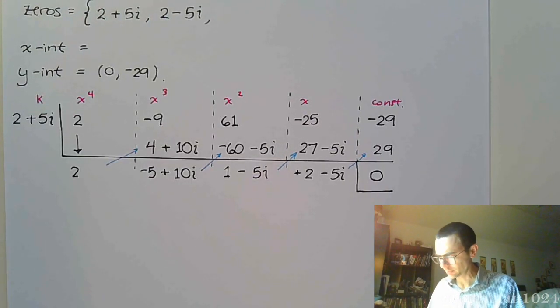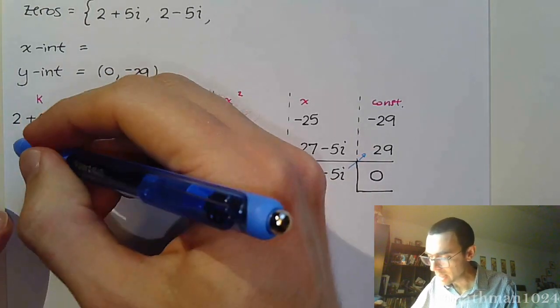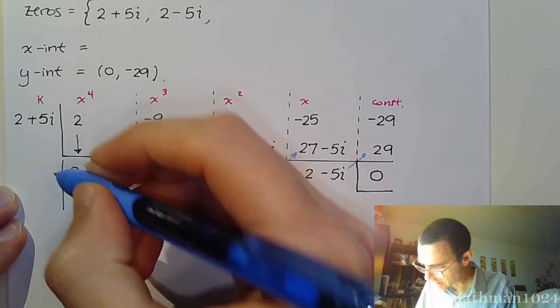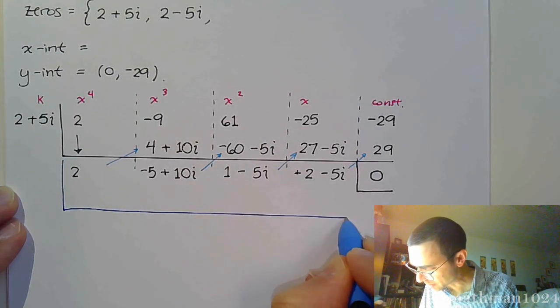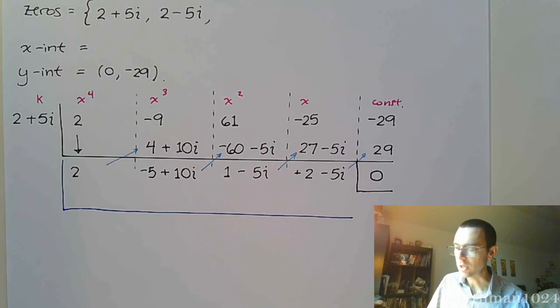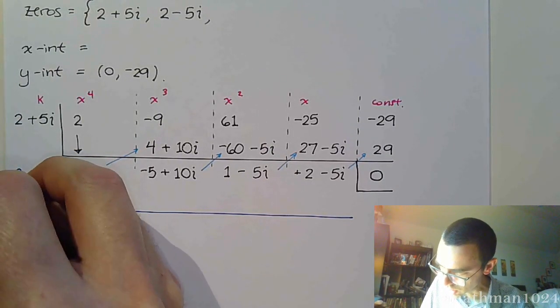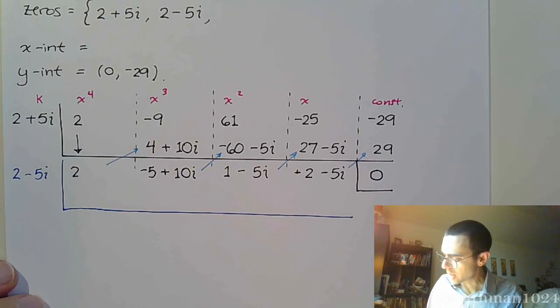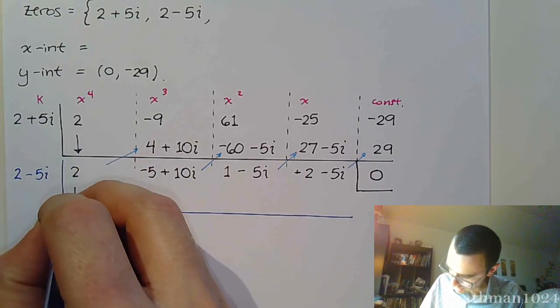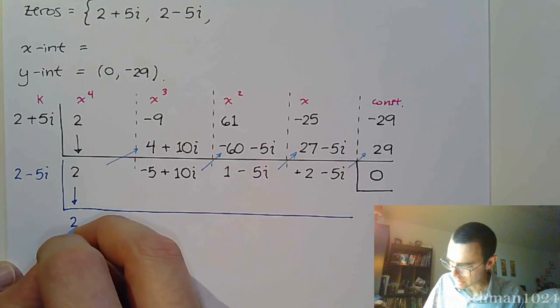Alright, so now, we're going to do synthetic division again, but this time, instead of using 2 + 5i, we're going to use his conjugate, and his conjugate is 2 - 5i. Remember, with conjugates, the real part stays the same, but you change the sign of the imaginary part. Alright, so here, bring down the 2.